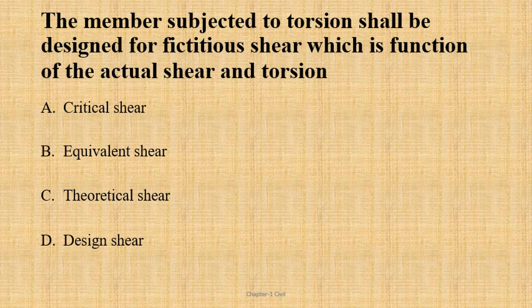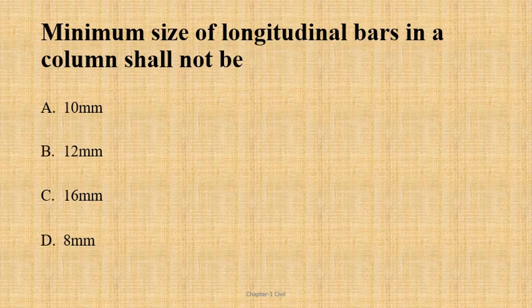The member subjected to torsion should be designed for equivalent shear, which is a function of actual shear and torsion. If the shear involves torsion, we have a design parameter question. The answer is equivalent shear.